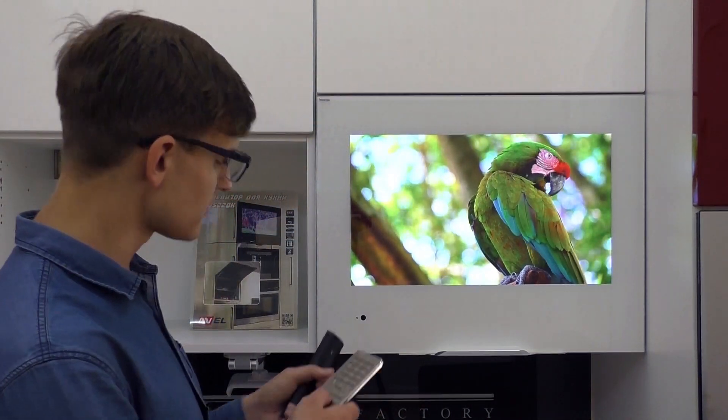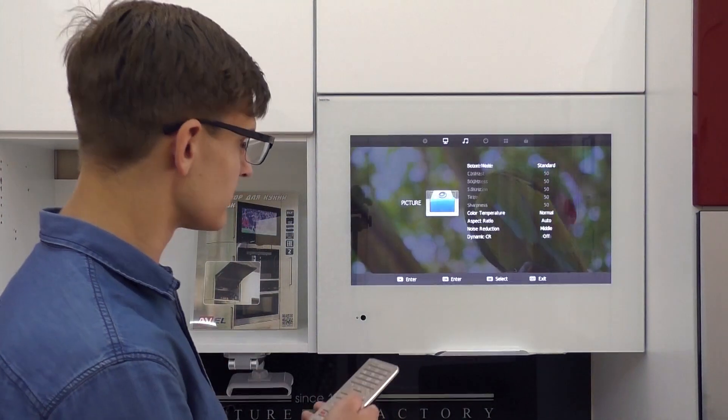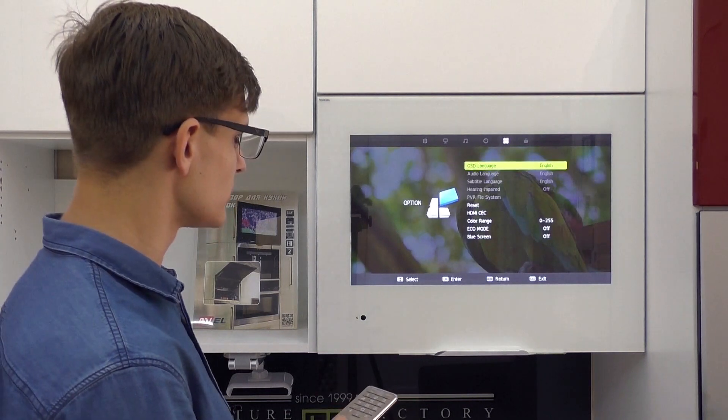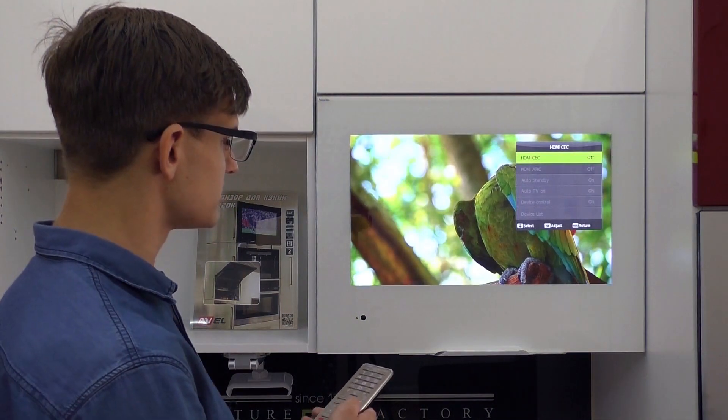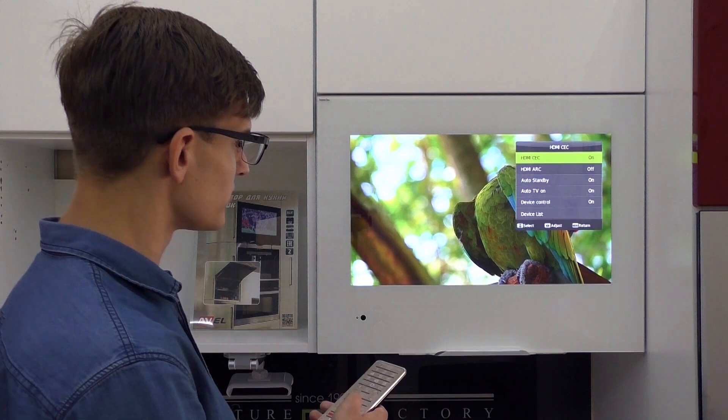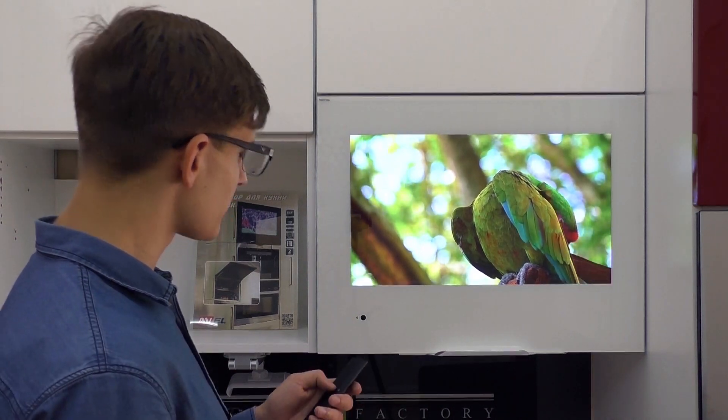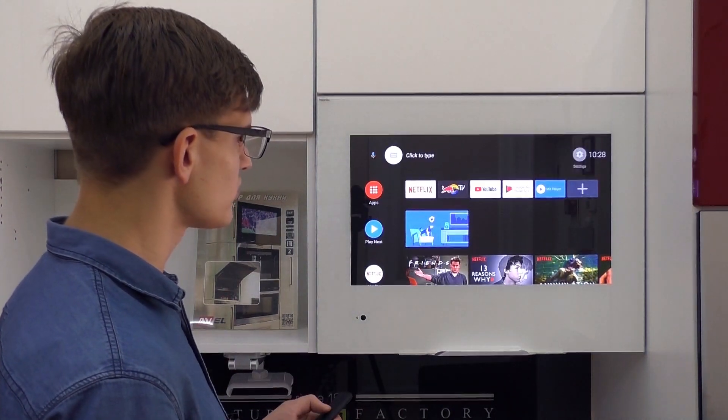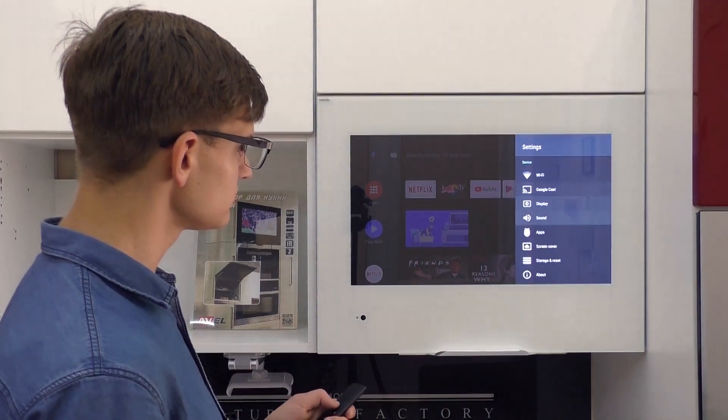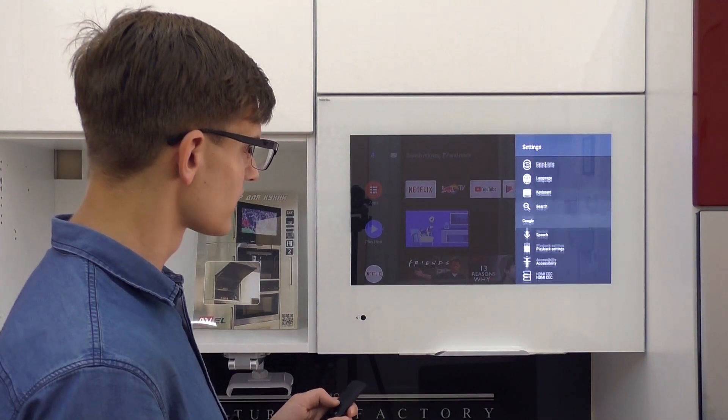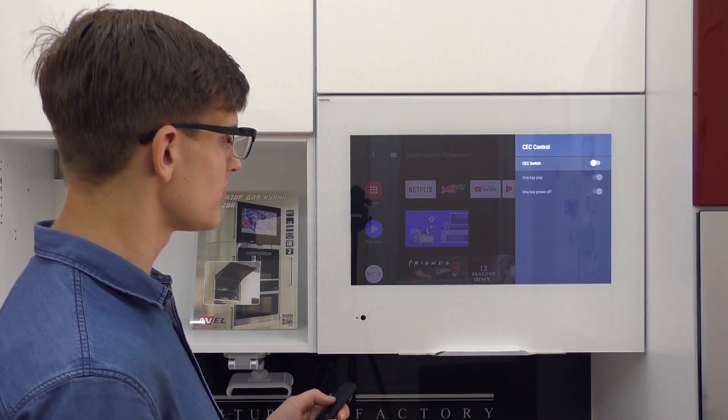The function is disabled both on the TV and on the set-top box by default. Let's activate it. Let's enter the menu on the TV, find and activate HDMI CEC. We will do the same with the Android set-top box. Now both devices are ready and can interact by HDMI CEC.